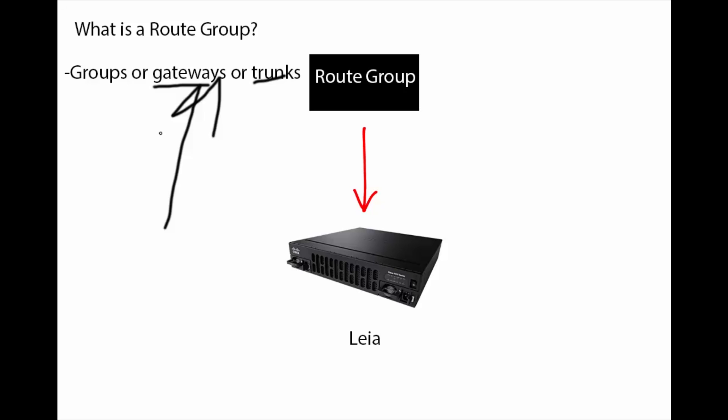That's great for a very simple configuration, but what's often simple may not be the best. So if we can use a route pattern to bypass the route group and route list and go directly to the trunk or gateway, why waste time with any of this? First big point: Cisco's best practice — they do post their SRND best practice guide. They tell you this is what they want you to do, this is how they design the system, and I do agree.